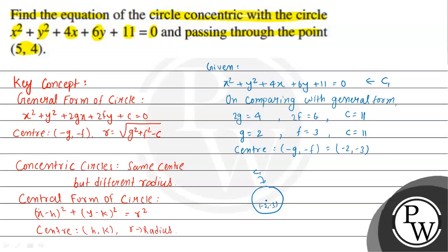Now the required circle passes through (5, 4) but has the same center. So suppose this is the required circle, and this point is (5, 4).